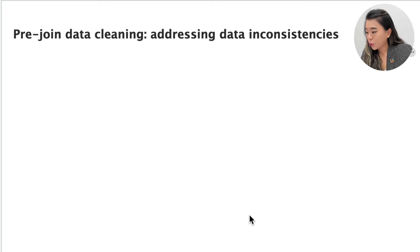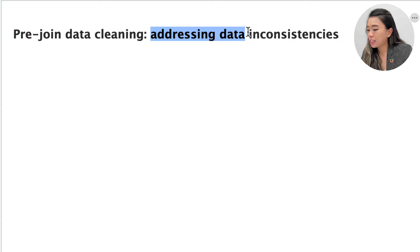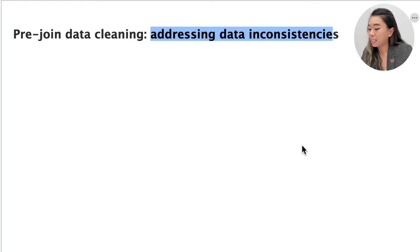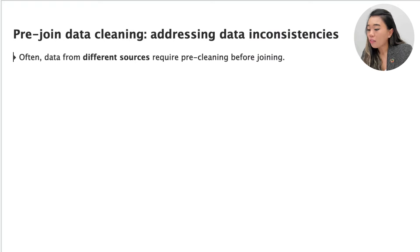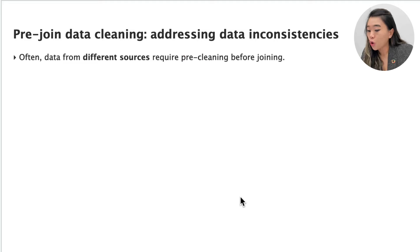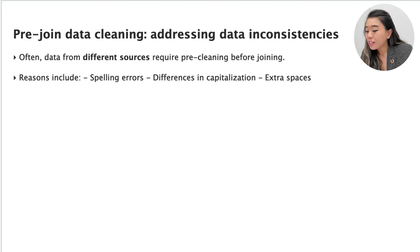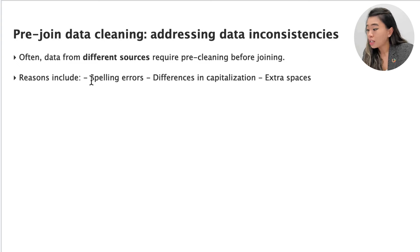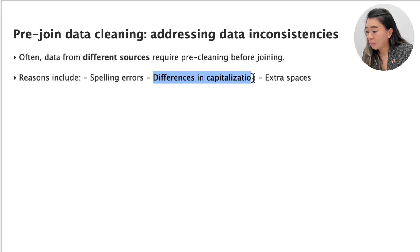Let's first look at some pre-join data cleaning and address some data inconsistencies. Oftentimes you will need to pre-clean your data when you draw it from different sources before you're able to join it. This is because there can be inconsistencies in how values are recorded in different tables, such as spelling errors, differences in capitalization, and extra spaces.